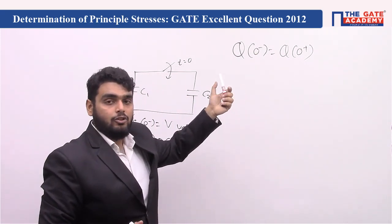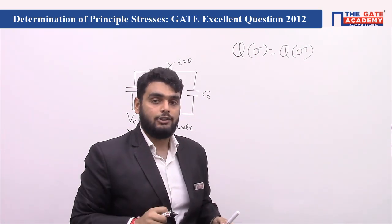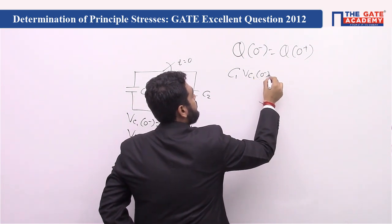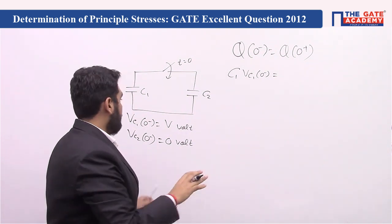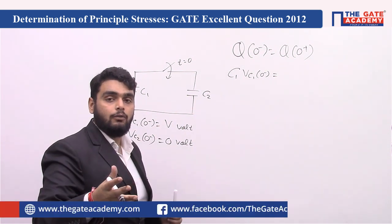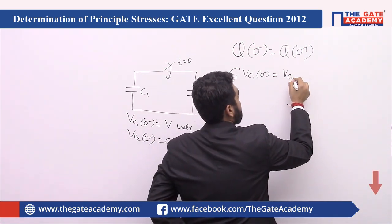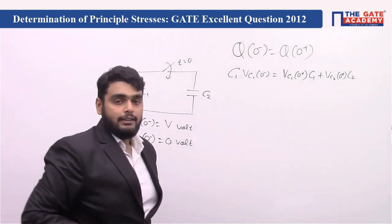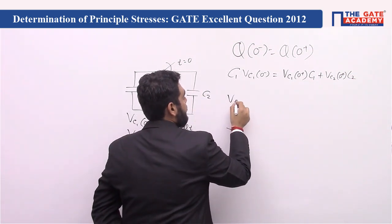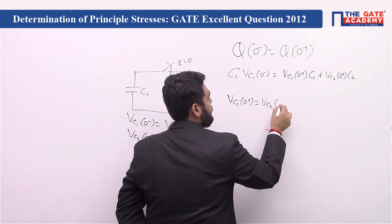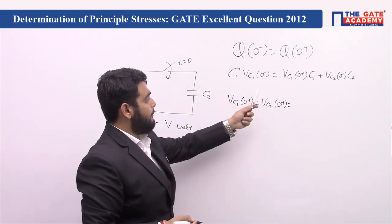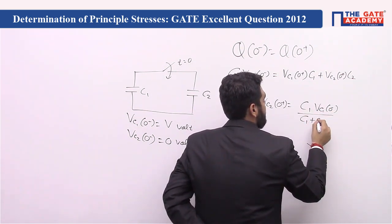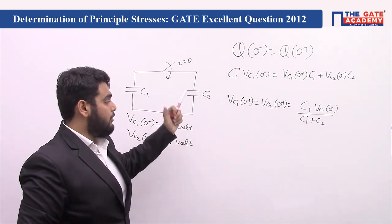Instead, we use the conservation of charge, which is always applicable for every system. Conservation of charge and conservation of energy are universal laws. At t = 0−, only C1 was charged, so: C1 · VC1(0−) = charge at 0+, where both capacitors are charged to a particular voltage V'. This gives: C1 · VC1(0−) = VC1(0+)·C1 + VC2(0+)·C2. Since VC1(0+) = VC2(0+) = V', rearranging gives V' = C1·VC1(0−) / (C1 + C2). This is the voltage across the combination.